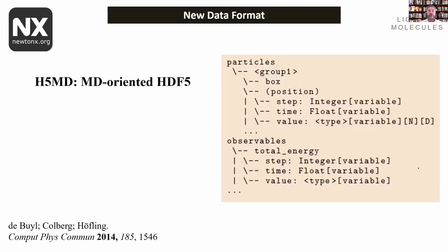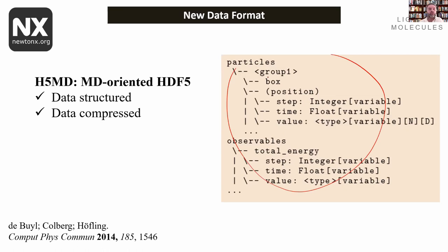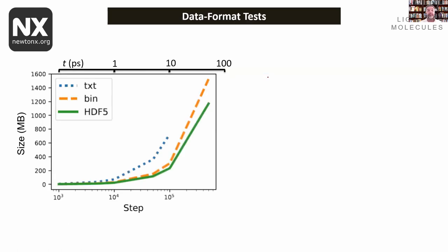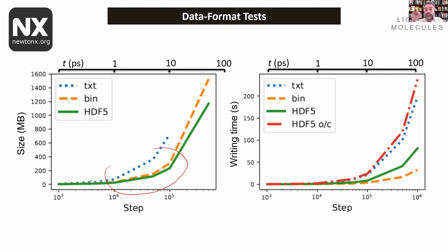Also thanks to the H5MD format, the data is written in a structured, compressed way with fast and parallel IO. It's portable and self-contained, making it perfect for MD. For dynamics, after one picosecond it starts to make a big difference to use HDF5 format instead of text — the text is the blue line, the green is HDF5. You save a lot in terms of file size. In terms of time, there's a mixed message depending on implementation: if you have many open and close operations, it's still slow, but eliminating that gives very large gains after one picosecond.